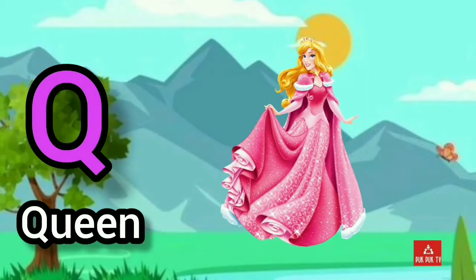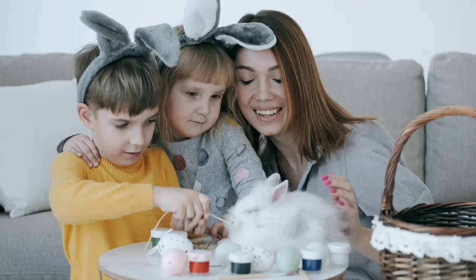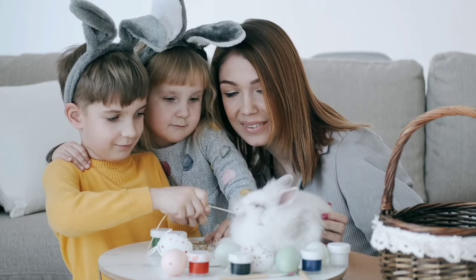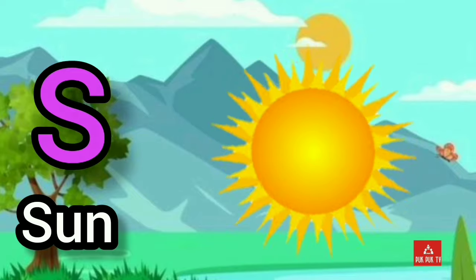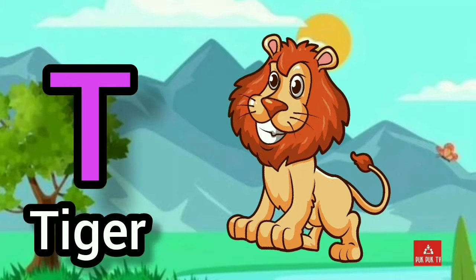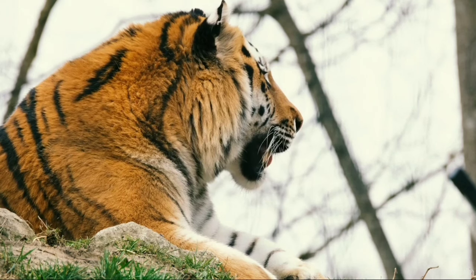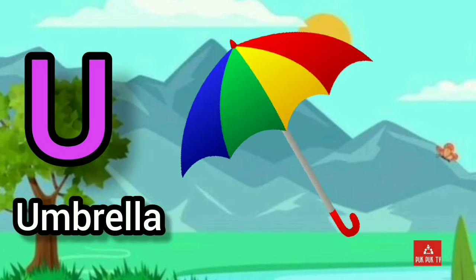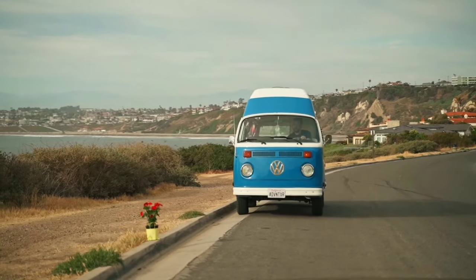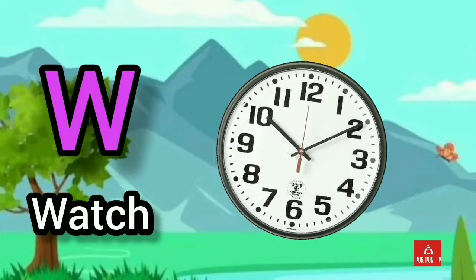Q. Q for Queen. R. R for Rabbit. S. S for Sun. T. T for Tiger. U. U for Umbrella. V. V for Van. W. W for Watch.